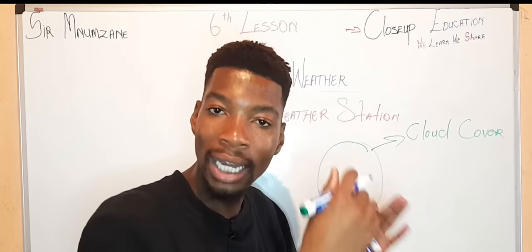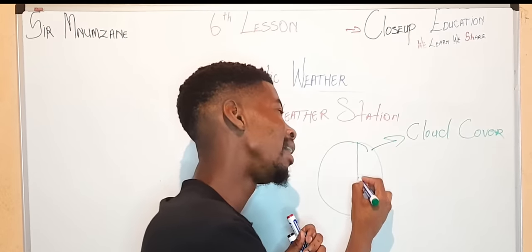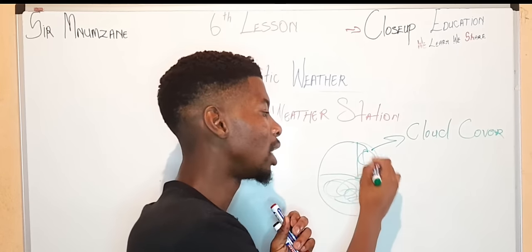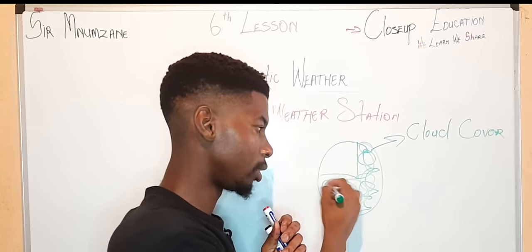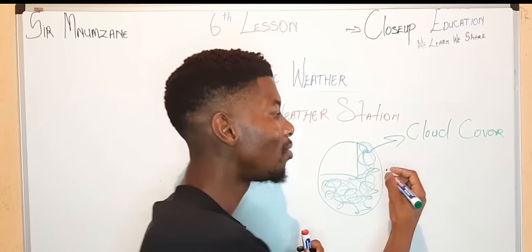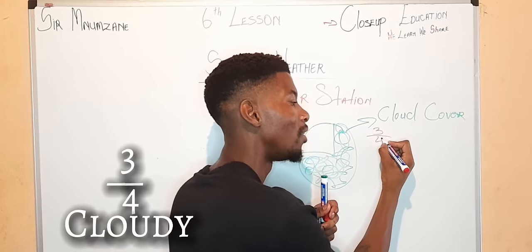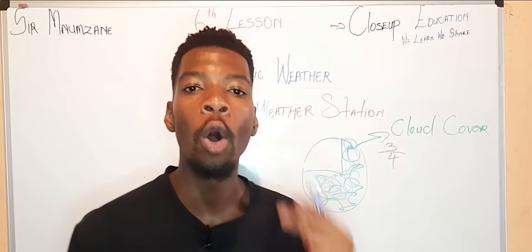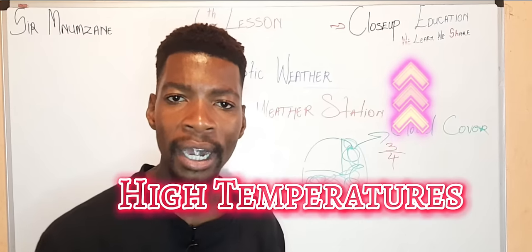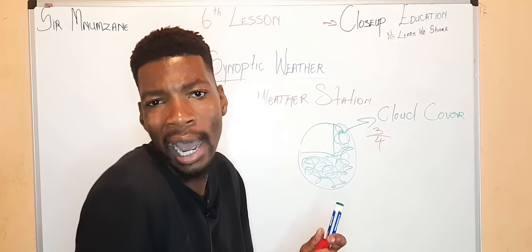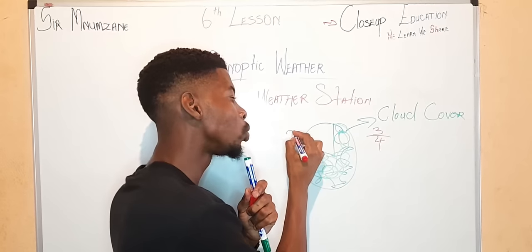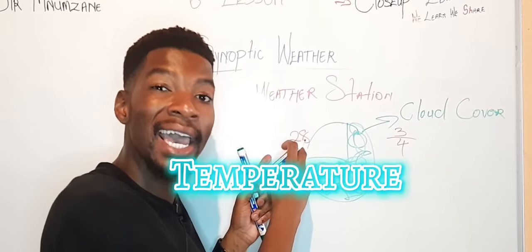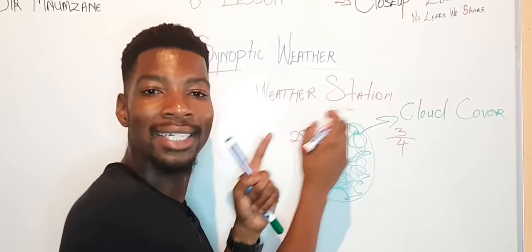So now for our cloud cover, we'll be using a cloudy cloud cover. This is how a cloudy cloud cover looks like. It is three over four, it is cloudy. And when it's cloudy, there are obviously high temperatures. And what will the high temperature look like? It is 28 degrees. This is where a temperature has to stay on the weather station model.